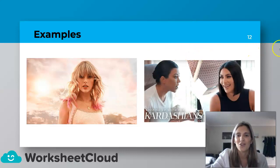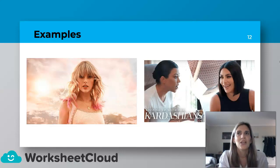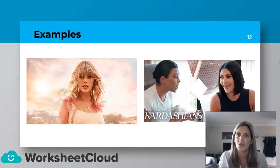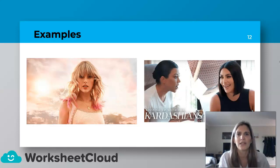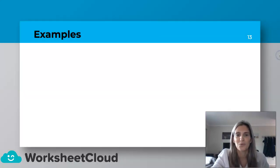We have the Kardashian sisters. If you don't know them, they like to fight. I'm sure if you have a sibling, we love each other, but sometimes we just get on each other's nerves. So the interjection we could use there is, "Oh, my sister is so annoying." So the interjection there was "oh."